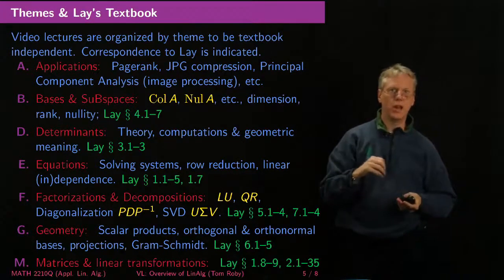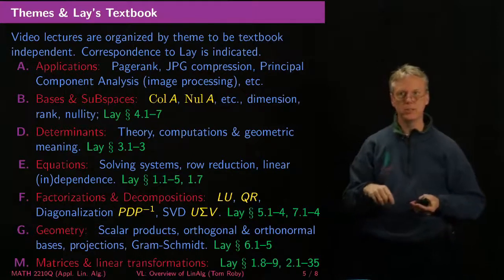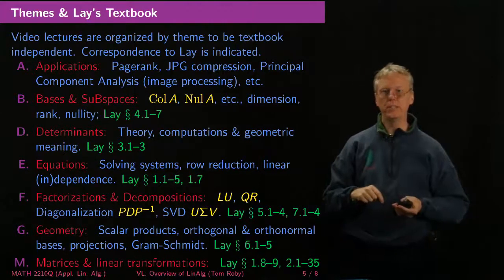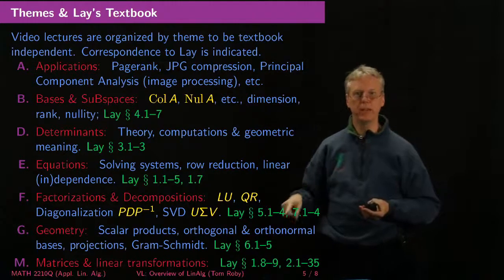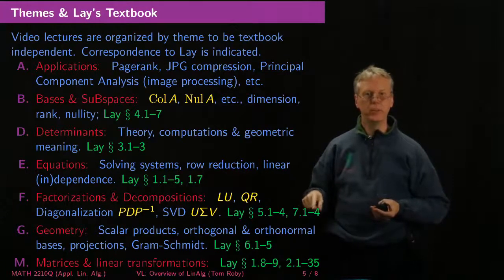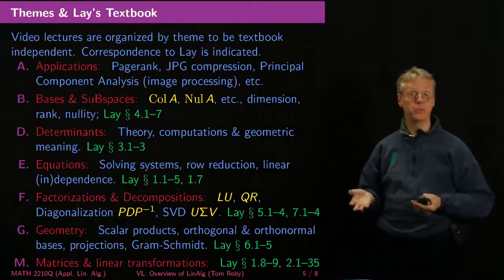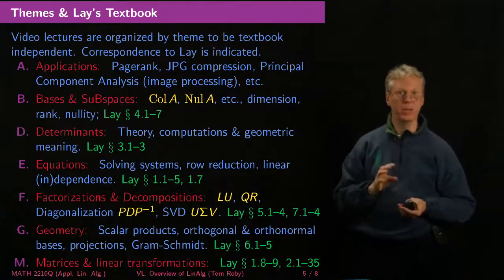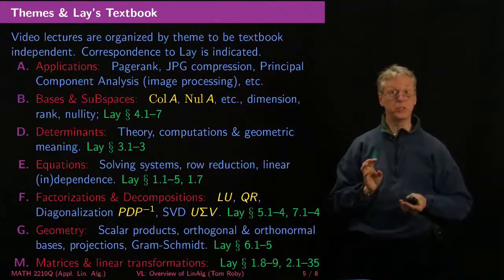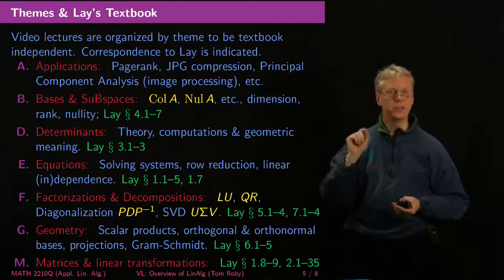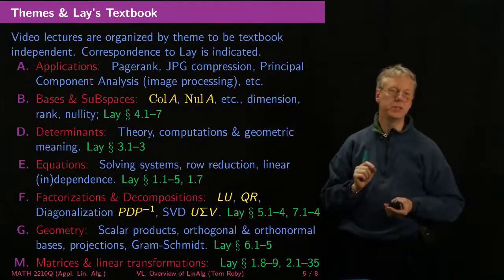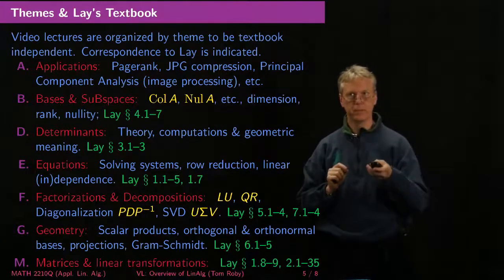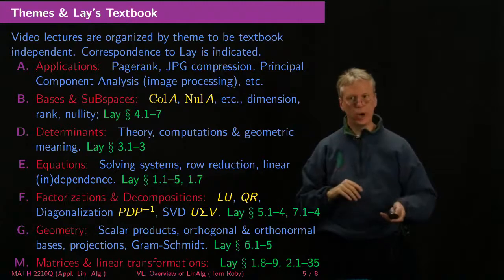And then finally, at the end of that chapter, we'll talk about least squares approximations. And so finally, some of the highlights of the course are in Chapter 7. So we'll find out that we can diagonalize real symmetric matrices always. You can't diagonalize every square matrix, but real symmetric matrices you always can. And that'll lead us through a very nice path to the singular value decomposition. So that's the quick overview for the course.